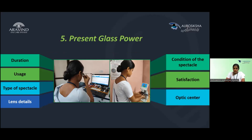Step 5 is present glass power. Check the present glass power using neutralization by hand or a lensometer. Along with the power, ask the duration and usage of the spectacles — whether worn regularly or irregularly. Note the type of spectacle, lens details, condition, and patient satisfaction. Check the optical center only when necessary — for example, if the patient recently got glasses and complains of headache, eye pain, strain, or discomfort.